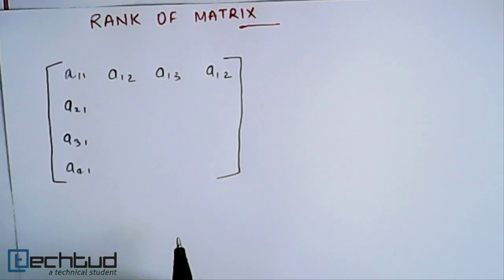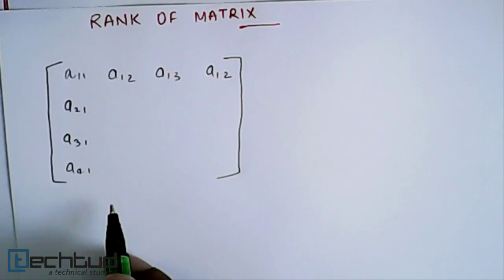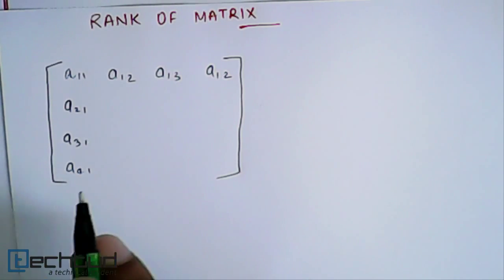Now, if I say that the rank of matrix is 4, it means that there are 4 linearly independent row vectors or column vectors in this matrix.